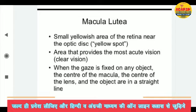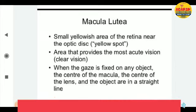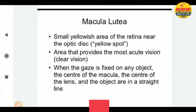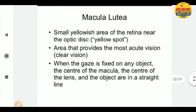When the gaze is fixed on any object, the center of the macula, the center of the lens, and the object are in a straight line. When you stare at something, the center of the macula and the center of the lens align with the object.